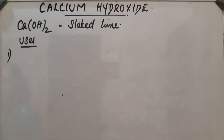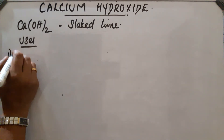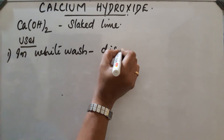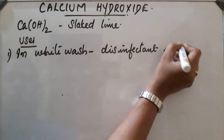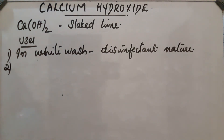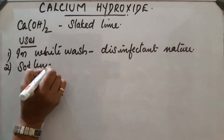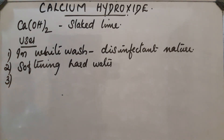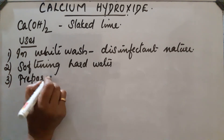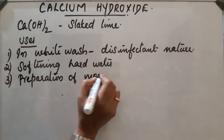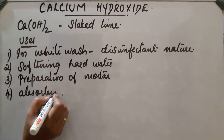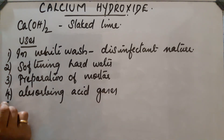The uses of calcium hydroxide are as follows. First, it is used in whitewash due to its disinfectant nature. Second, it is used for softening hard water. Third, it is used in the preparation of mortar, which is a building material used for binding. Fourth, it is used for absorbing acid gases.